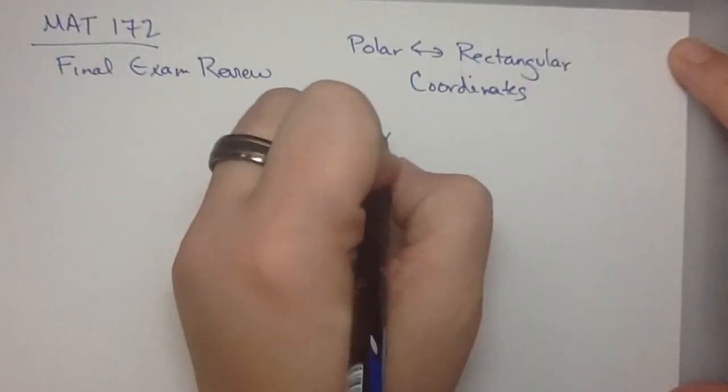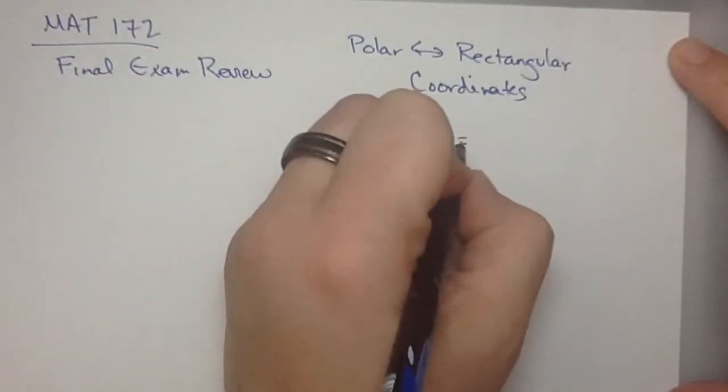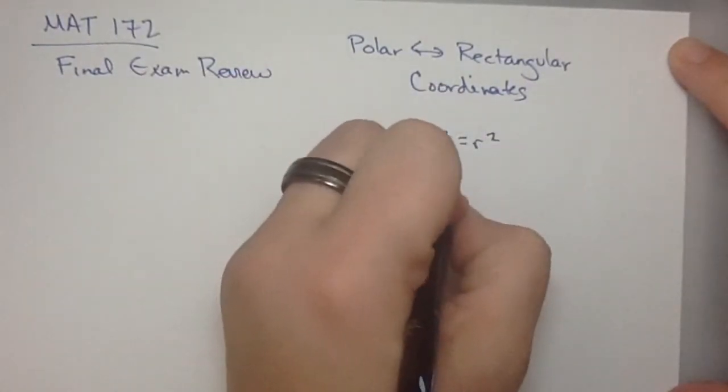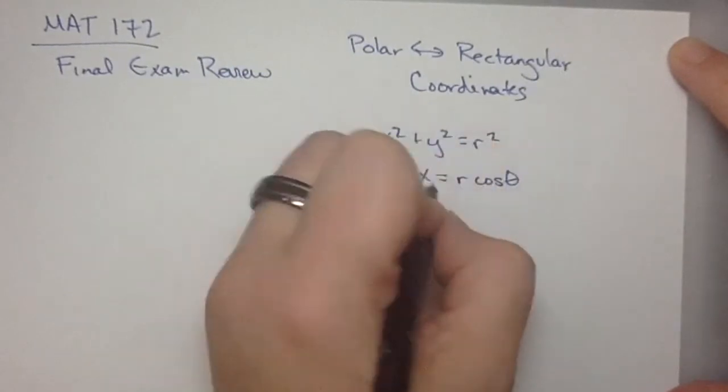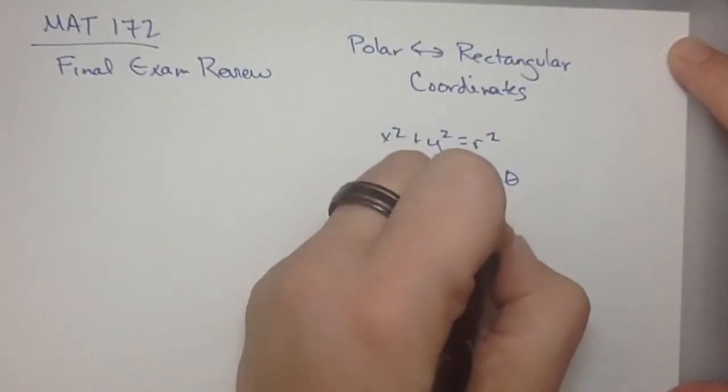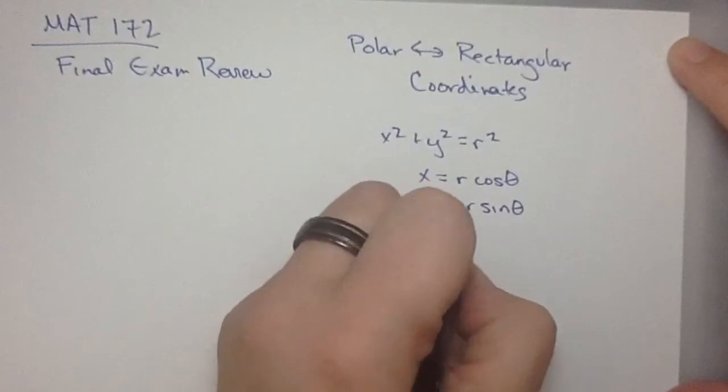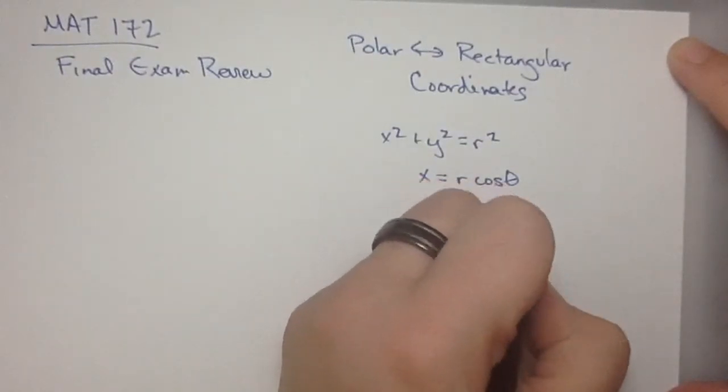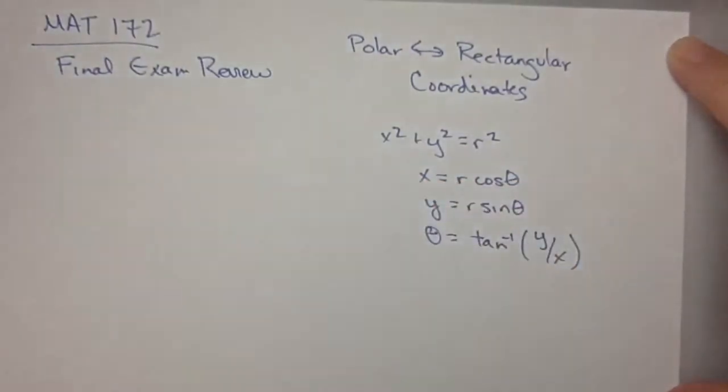So there is a set of ideas that you should keep in your mind whenever you're doing this kind of thing. And it's that x squared plus y squared is r squared, x is r cos theta, y is r sine theta, and theta is the inverse tangent of y over x. This is what you should have in your mind.